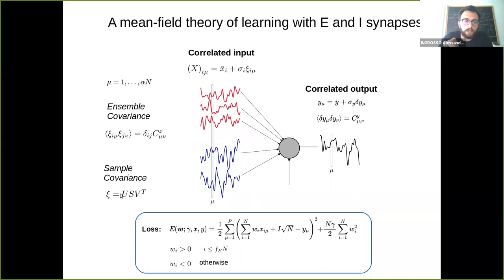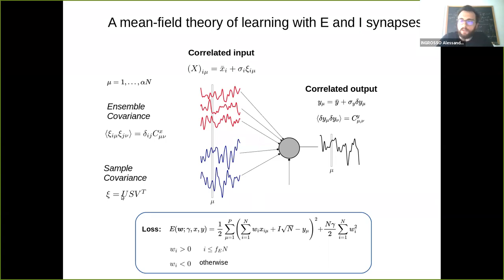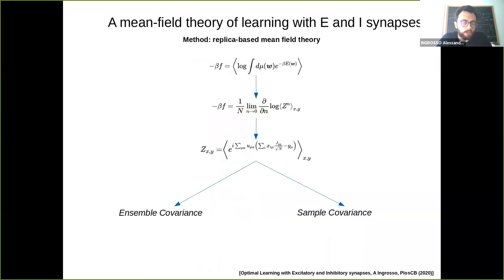The second case is the sample covariance: we assume we measure the targets, perform PCA, remove the mean, normalize, and write xi using an SVD as USV^T. We assume we know S — the spectrum, meaning the PCA variances S-squared — but we don't know the actual PCA directions, so we average over U and V. This is the model. The method used is the standard replica method.